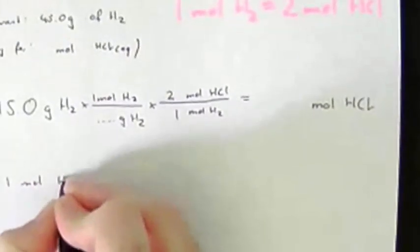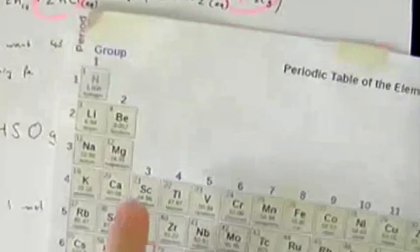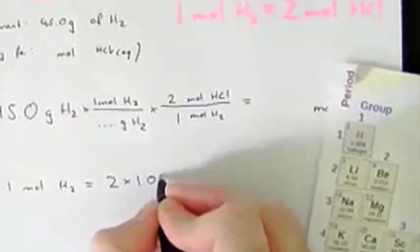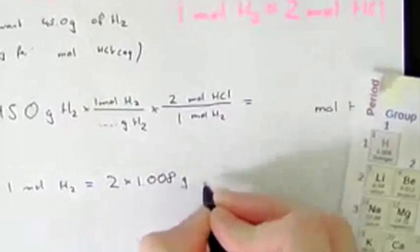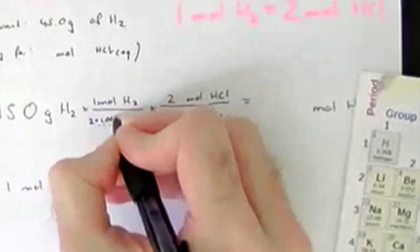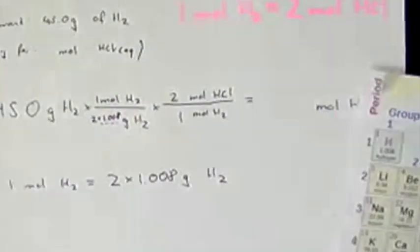Let me go into the periodic table and we look at the mass of hydrogen. So the atomic mass of hydrogen is 1.008, and 1.008 times H2. So if you calculate this, I can write it here: 2 times 1.008.